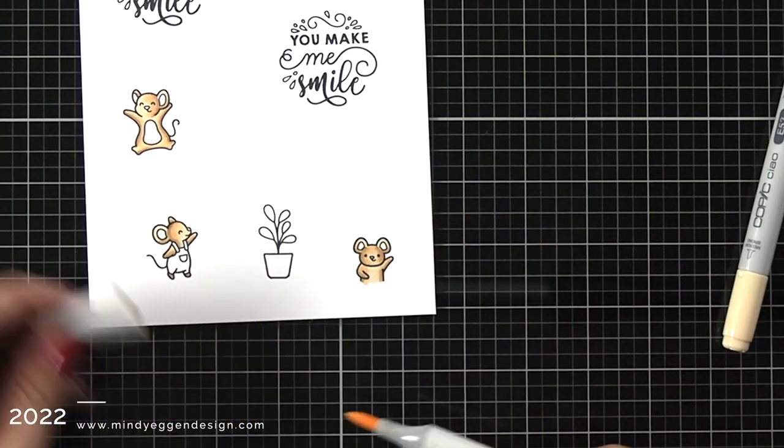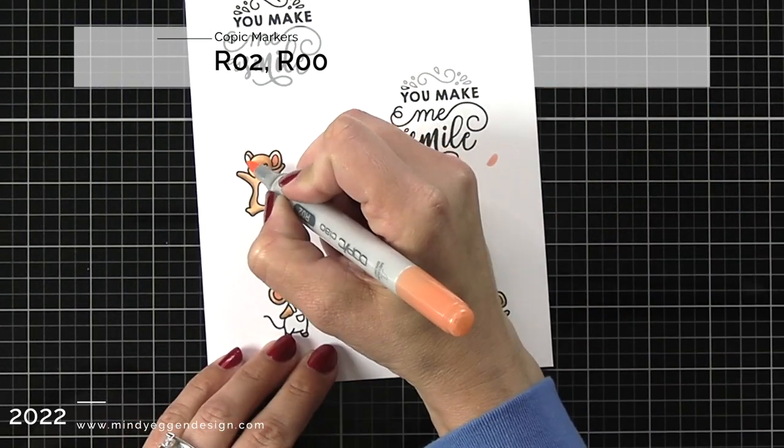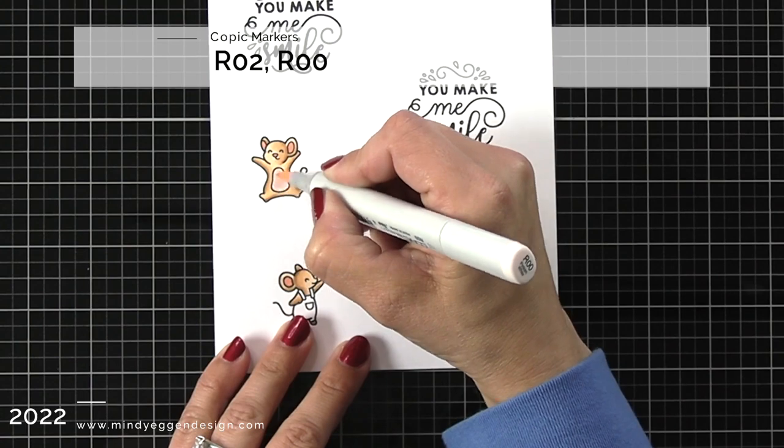For the ears and also the nose and the bellies, I'll be using R02, which is the ears, and R00 for the belly.